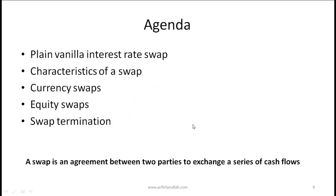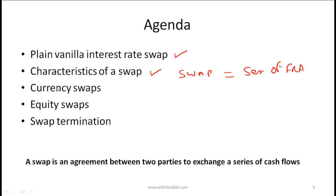Welcome to part 2 of the presentation on swaps. In part 1 we talked about plain vanilla interest rate swaps, the general characteristics of swaps, and we also showed that a swap can be thought of as a series of forward rate agreements. Now in part 2 we'll talk about currency swaps, equity swaps, and how a swap agreement can be terminated.